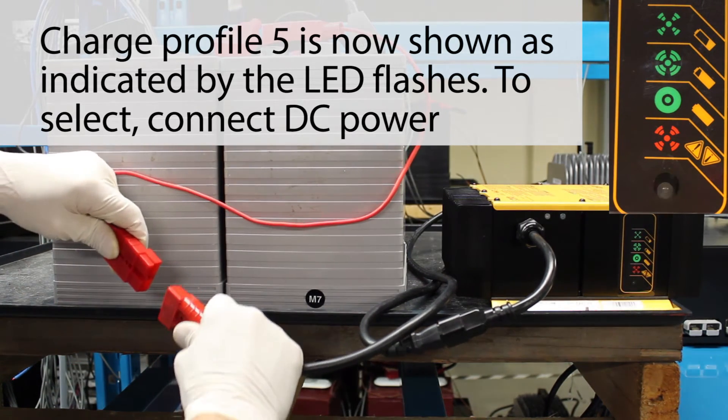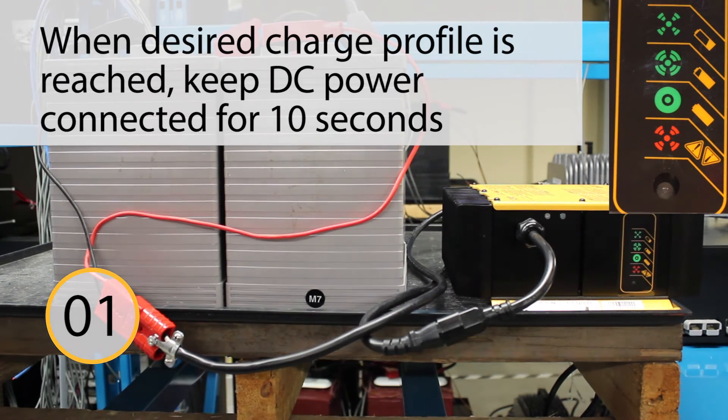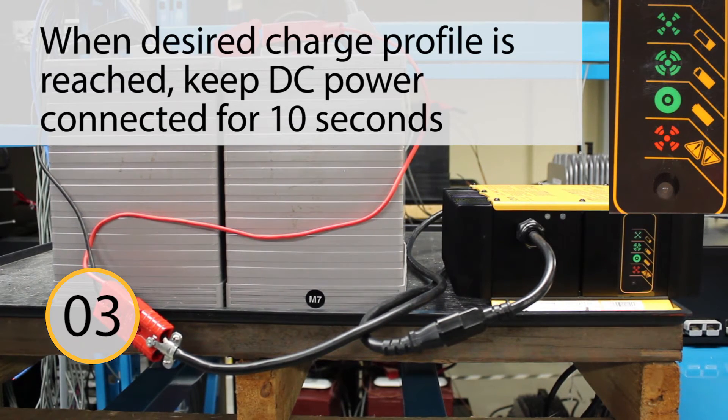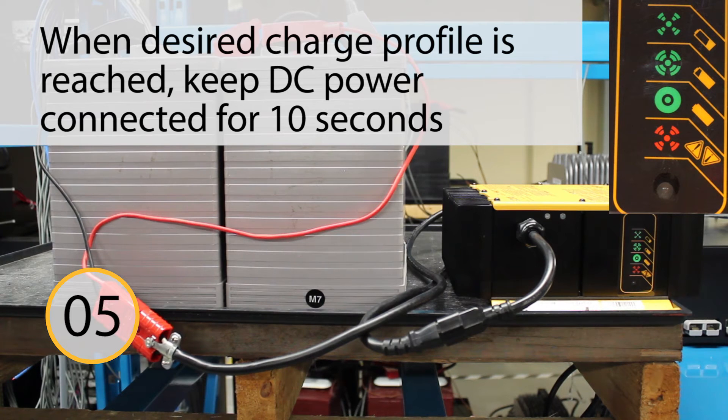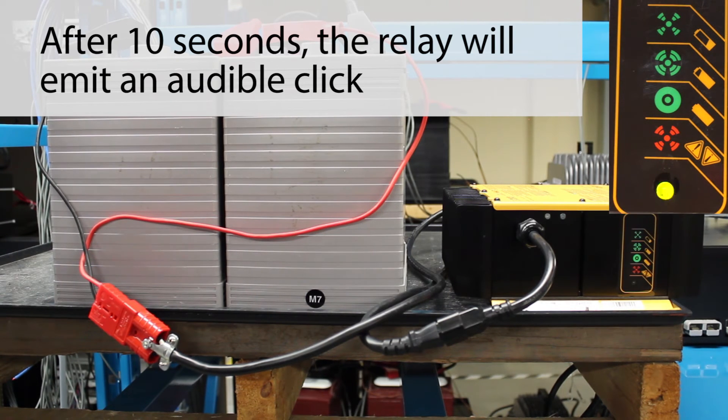To lock in your selection, connect DC power. Keep DC power connected for 10 seconds. After 10 seconds, the relay will emit an audible click.